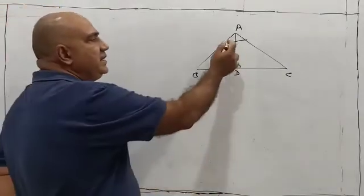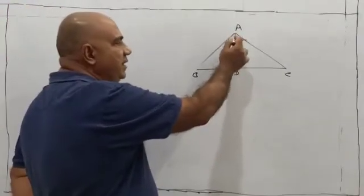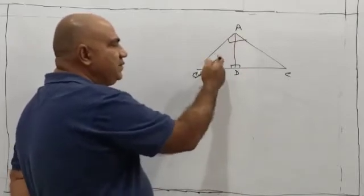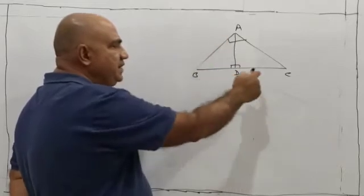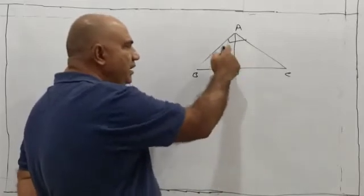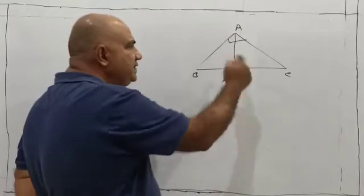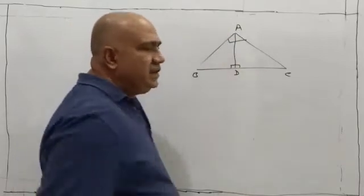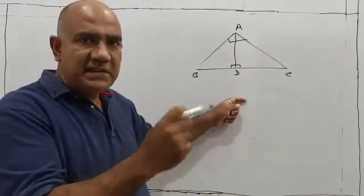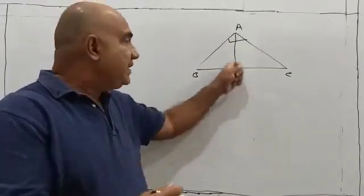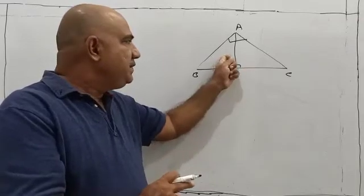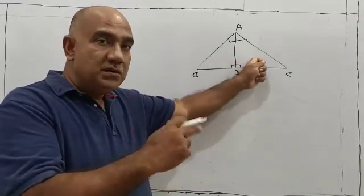Here the right angle vertex is A. From A, perpendicular AD is drawn onto the hypotenuse BC of triangle ABC. One triangle formed is triangle ADB and another one is triangle ADC. We need to prove that triangle ADB is similar to triangle ABC, also triangle ADC is similar to triangle ABC, and triangle ADB is similar to triangle ADC.